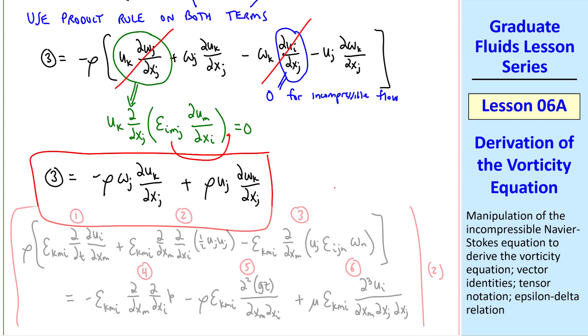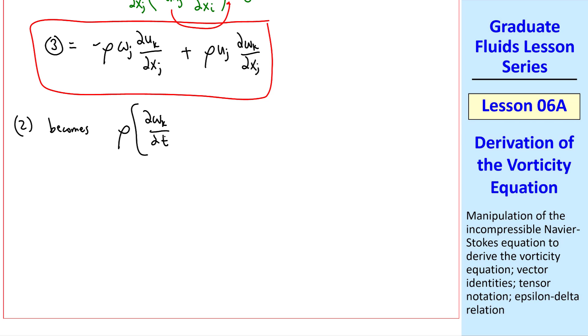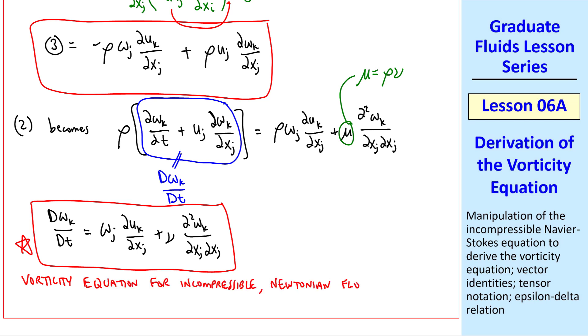Finally we write term three is minus rho omega j del u k del xj plus rho uj del omega k del xj. That's our term three. Putting all of these terms together in their simplified form into equation two yields the following. Rho del omega k del t plus uj del omega k del xj equal rho omega j del u k del xj plus mu del squared omega k del xj del xj. But you may recognize this as the material derivative of omega k. We'll also let mu equal rho times nu, the kinematic viscosity, so that we can get rid of the density in each term.